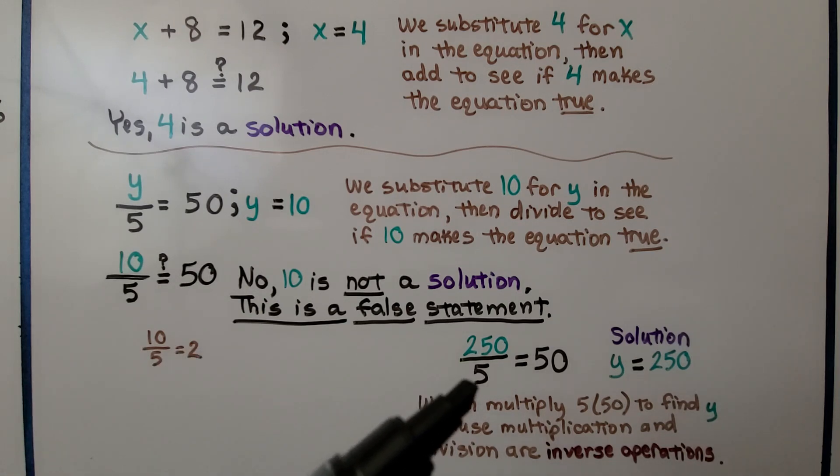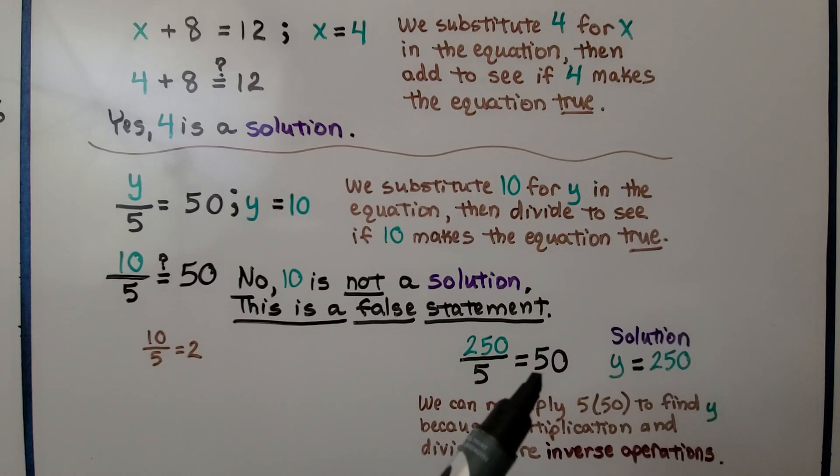We can multiply five times fifty to find the value of y, because multiplication and division are inverse operations. That means they're opposite operations. So multiplying this denominator by the fifty will give us the numerator.